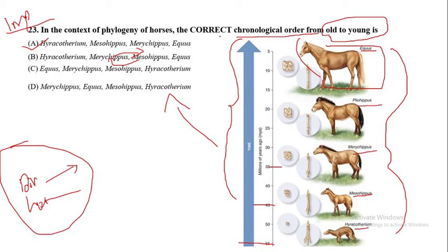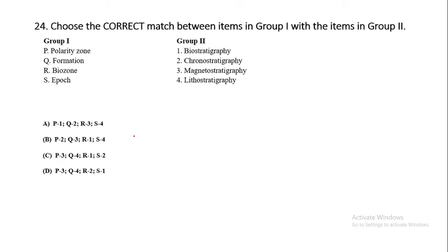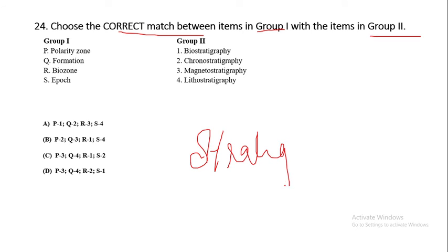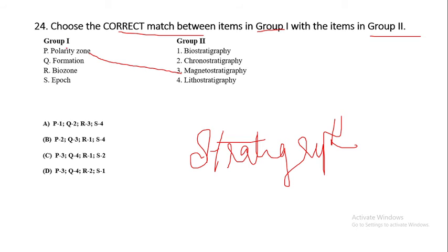Moving to the next question: choose the correct match between items in Group 1 and Group 2. This is from stratigraphy and is a very direct question. Polarity zone is the key characteristic of magnetostratigraphy. There are two types of polarity zones — normal and reverse.